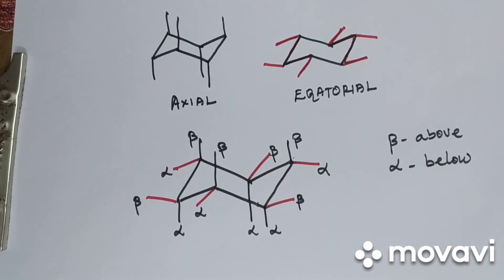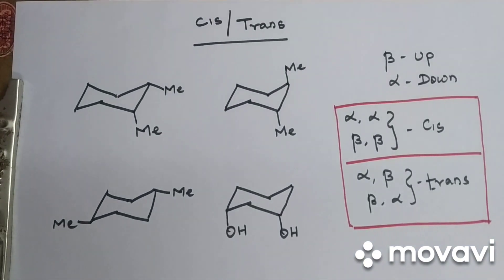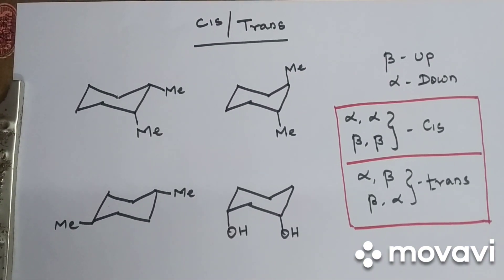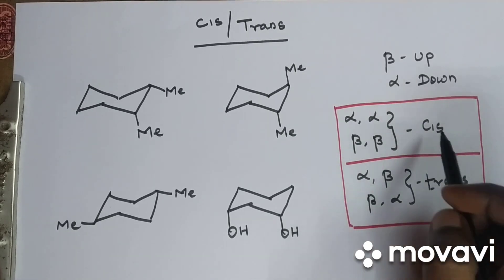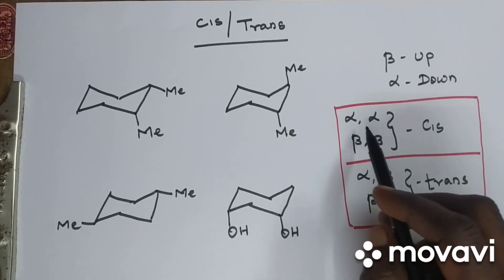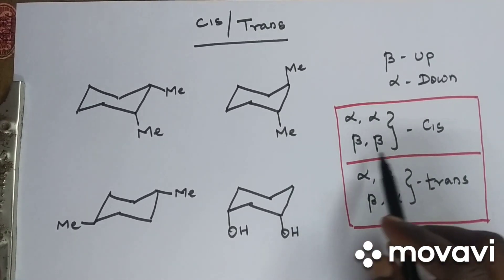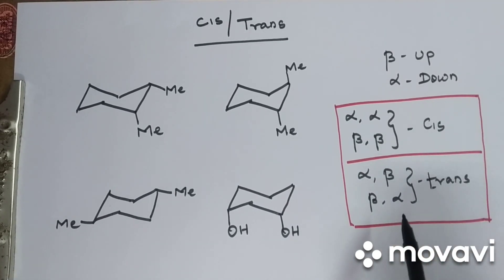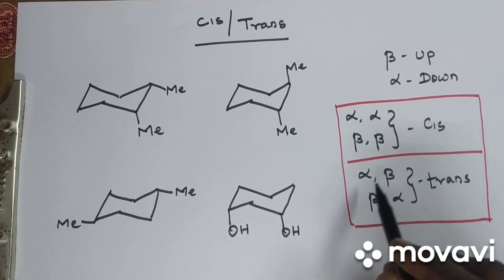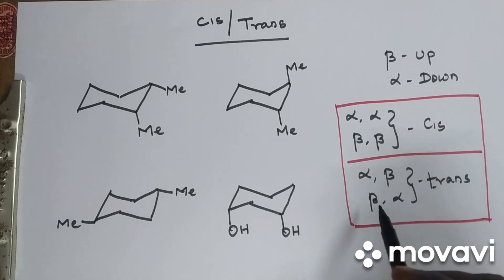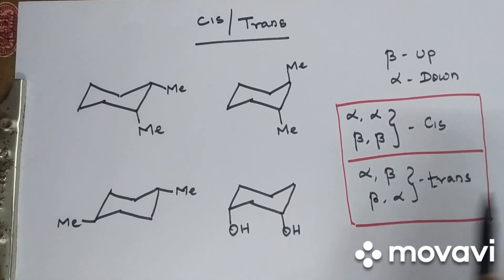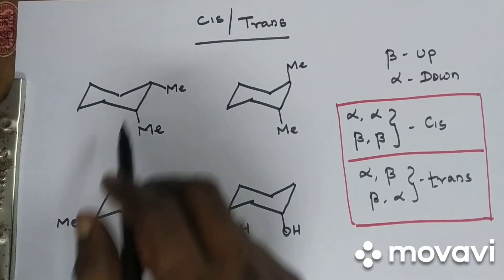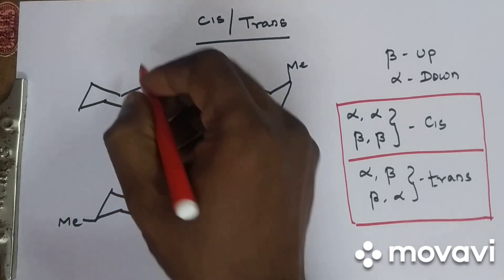Now let us see how to draw cis and trans di-substitutions in a cyclohexane ring. The rule is: if both substituents are in alpha-alpha or beta-beta orientation, it is a cis isomer. If there is a change — that is alpha-beta or beta-alpha — then it is a trans isomer.